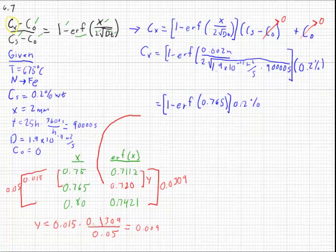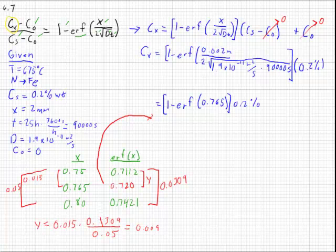Take that, plug it back into here, and finish up our concentration calculation. 1 minus 0.720 times 0.2% ends up being 0.056 weight percent nitrogen.